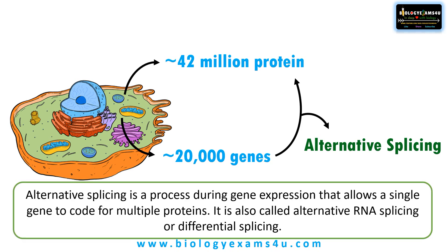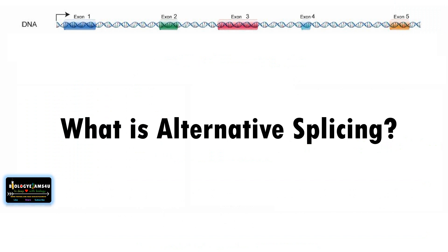Alternative splicing is a process during gene expression that allows a single gene to code for multiple proteins. It is also called alternative RNA splicing or differential splicing. Now let us see what alternative splicing is.